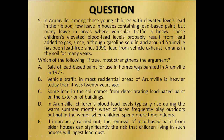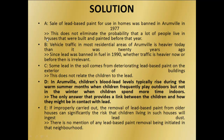Which of the following, if true, most strengthens the argument? Option A says the sale of lead-based paint for use in homes was banned in 1977. This does not eliminate the probability that many people live in houses built and painted before that year, so option A is ruled out. Option B says vehicle traffic in most residential areas is heavier today than it was 20 years ago. Since lead was banned in fuel in 1990, whether traffic is heavier now or before is irrelevant. Option C says some lead in the soil comes from deteriorating lead-based paint on the exterior of buildings. This does not relate the children to the lead, so option C is also ruled out. Option D discusses lead in the soil from deteriorating lead-based paint on the exterior of buildings.